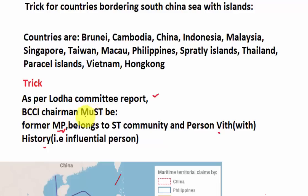From MUST: M stands for Malaysia, S for Singapore, T for Taiwan. From Former MP: M stands for Macau, P for Philippines, S for Spratly Islands, and T for Thailand.